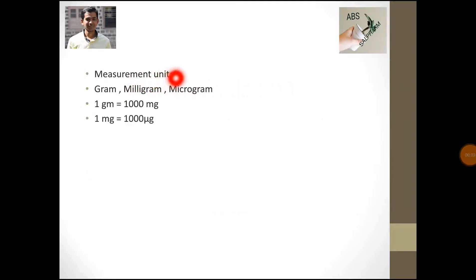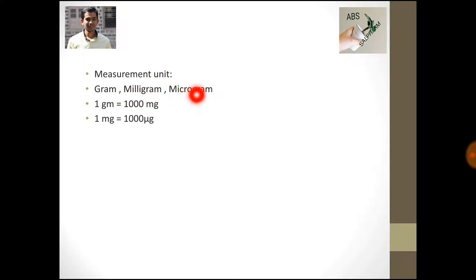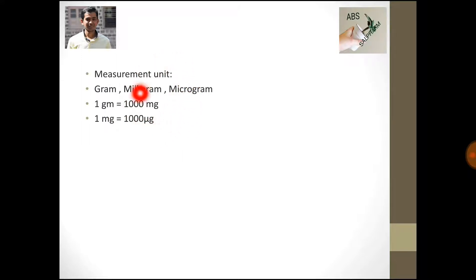Now we will see the measurement units. The first is gram, the second is milligram, and the third is microgram. One gram is equal to 1000 milligrams, and 1 milligram is equal to 1000 micrograms. We should know these units before calculating the concentration of our solution.